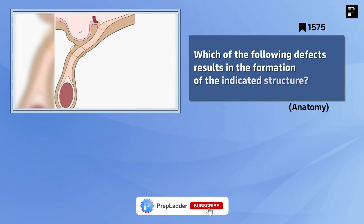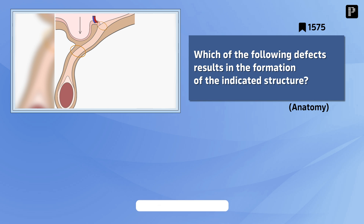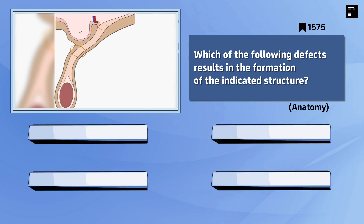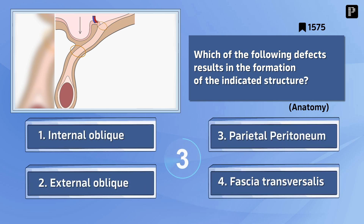Question 5: Which of the following defects results in the formation of the indicated structure? The correct answer is Facial transversalis.